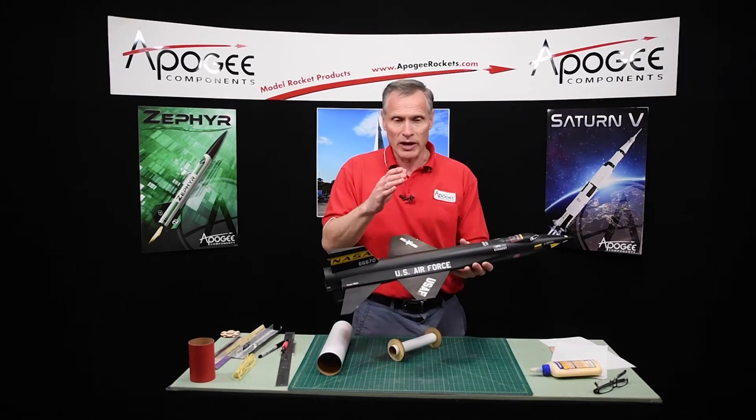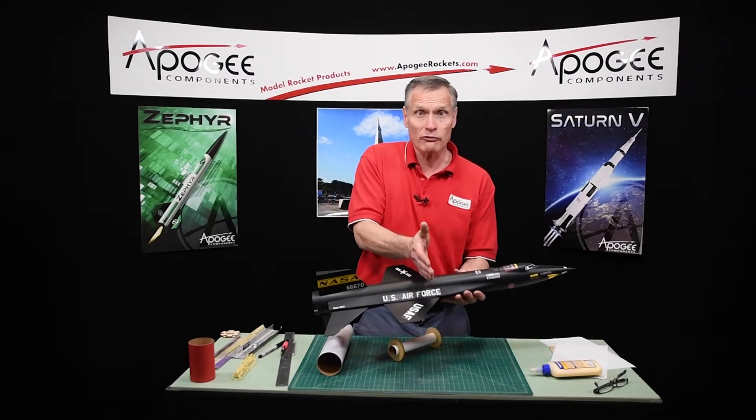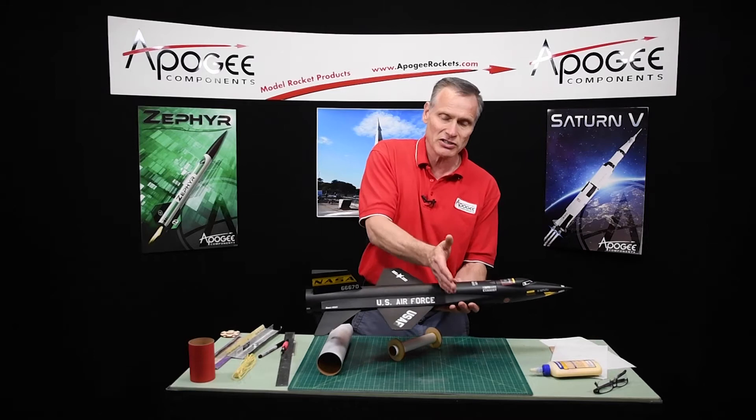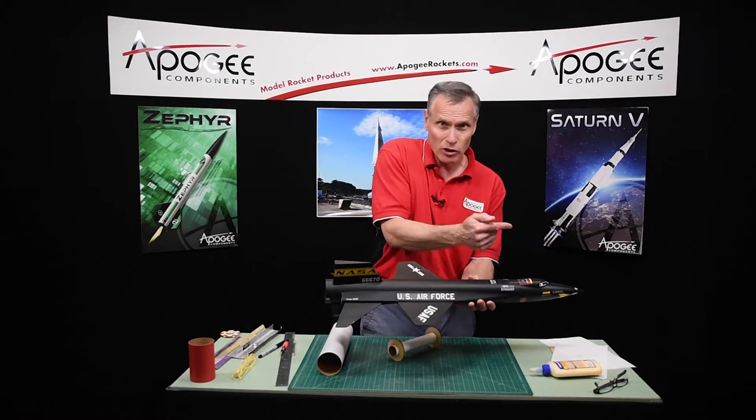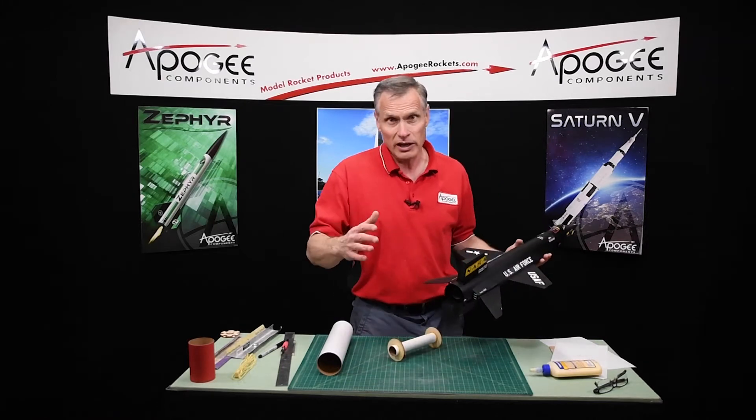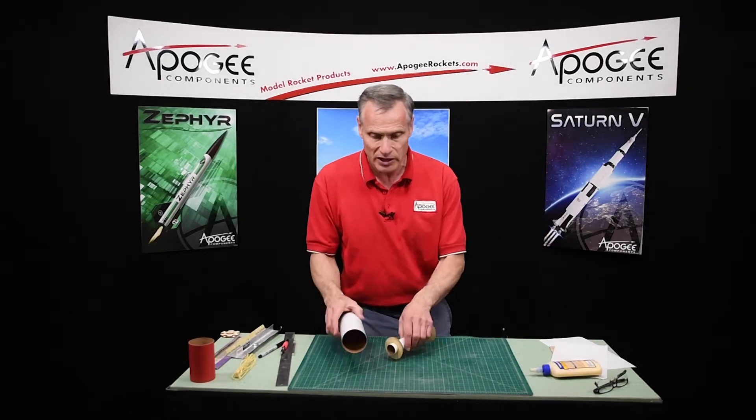Remember, this rocket with these big fins, the center of pressure has moved pretty far forward as well. So we need to keep that center of gravity even further forward. So we're trying to push all the weight towards the nose, and that's why we're recessing the engine mount tube inside of this.